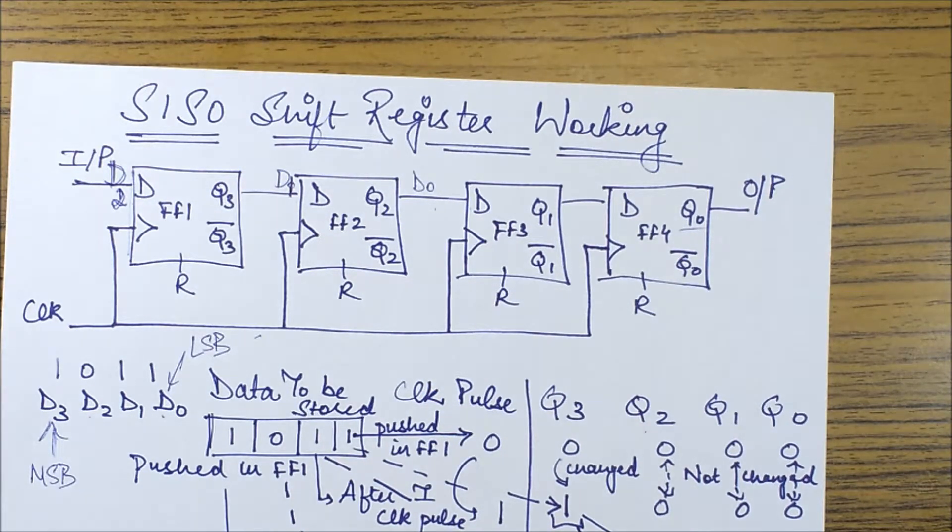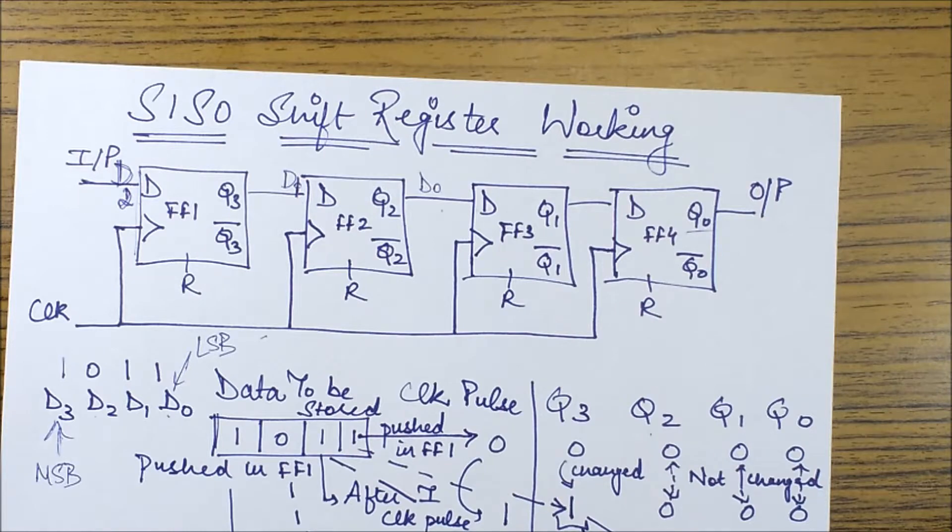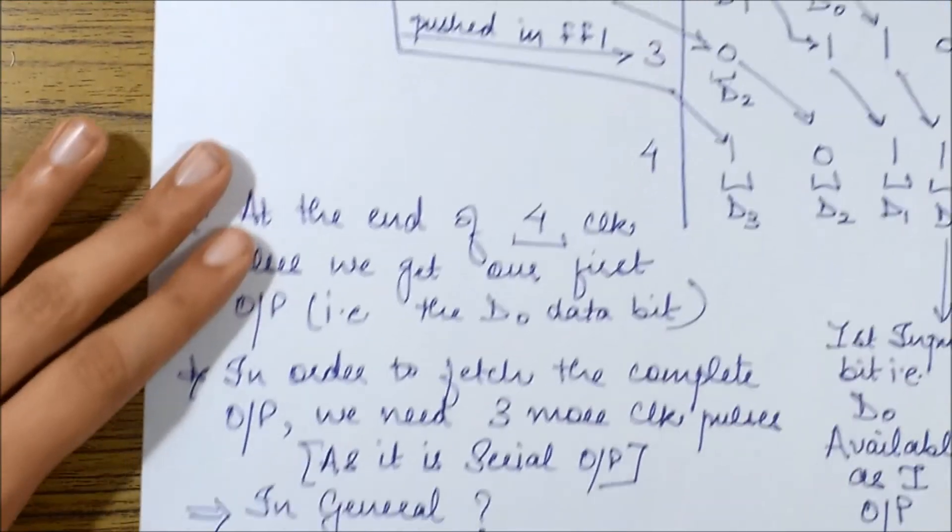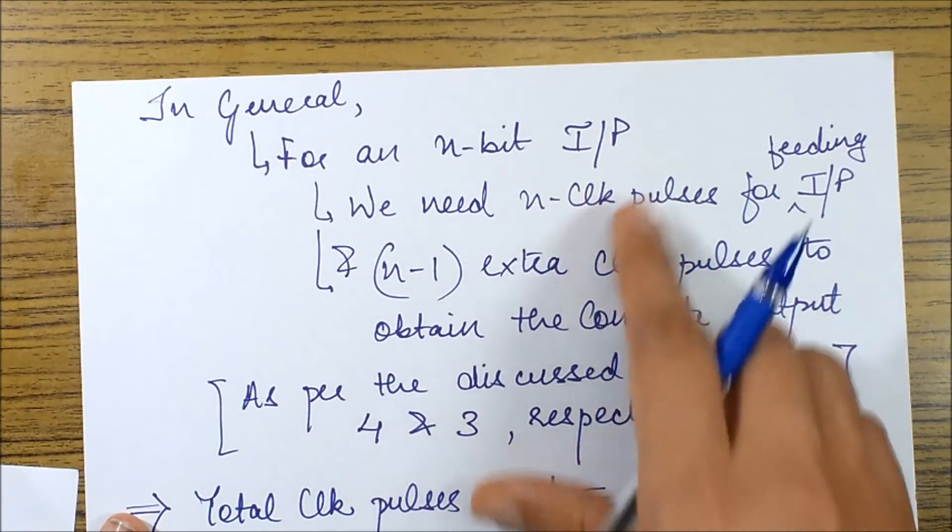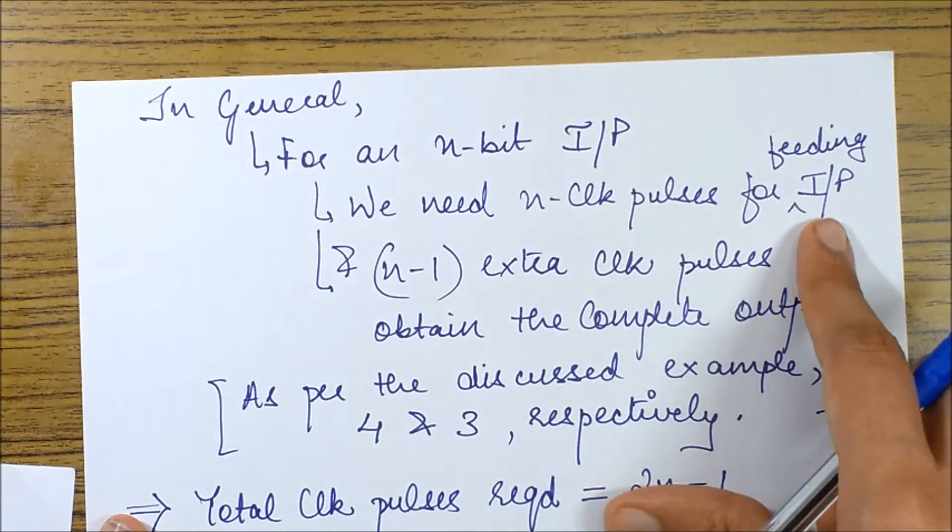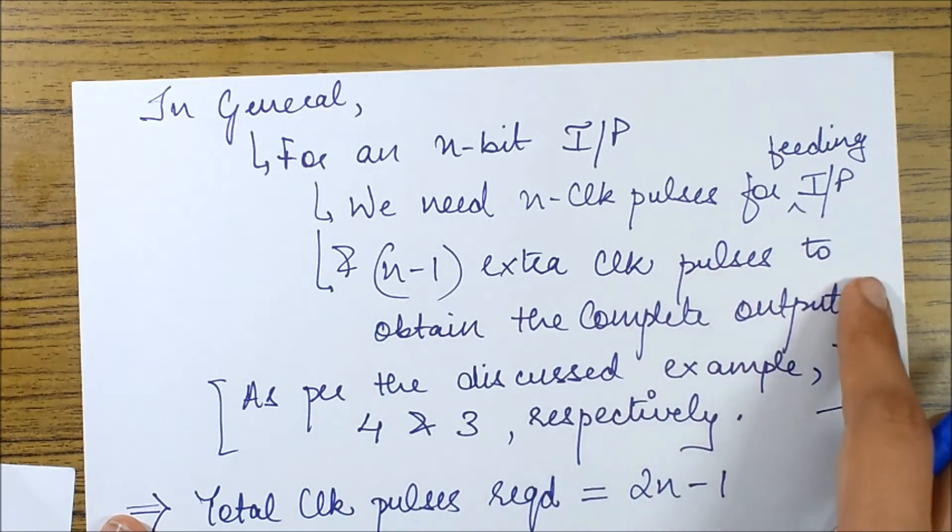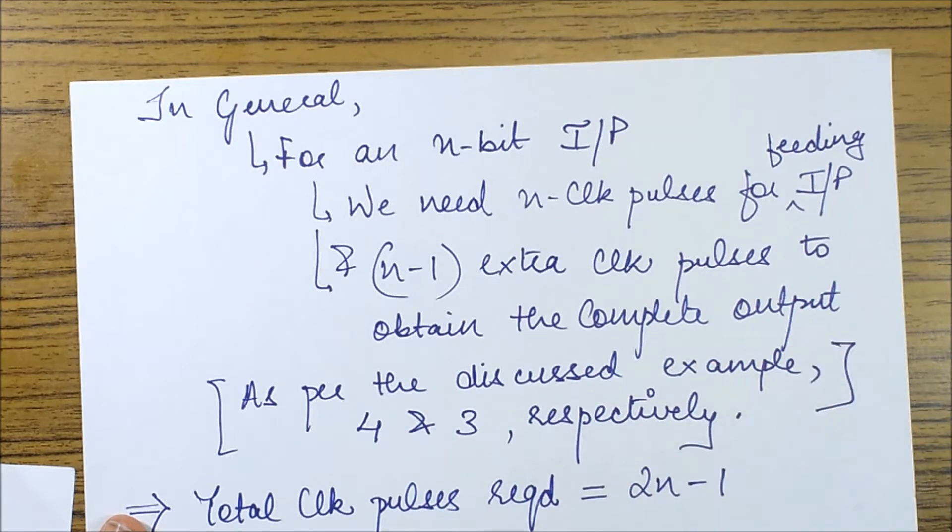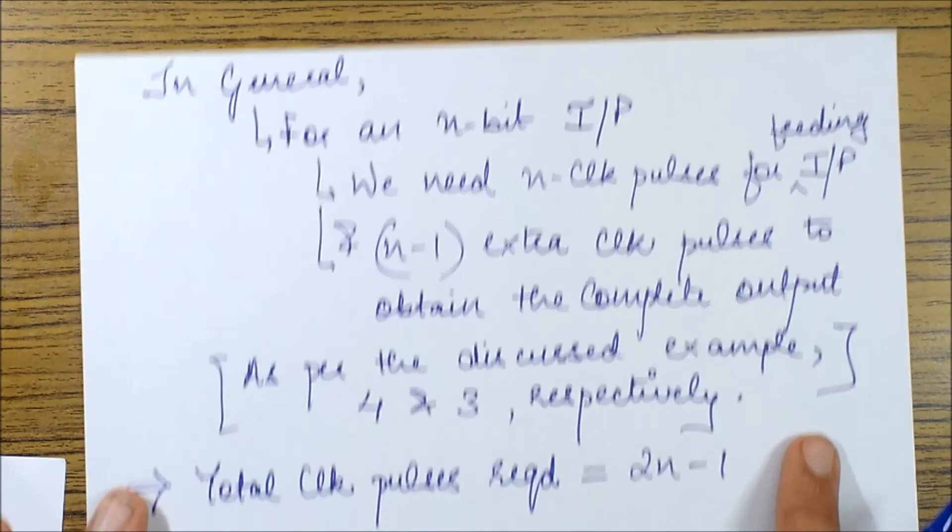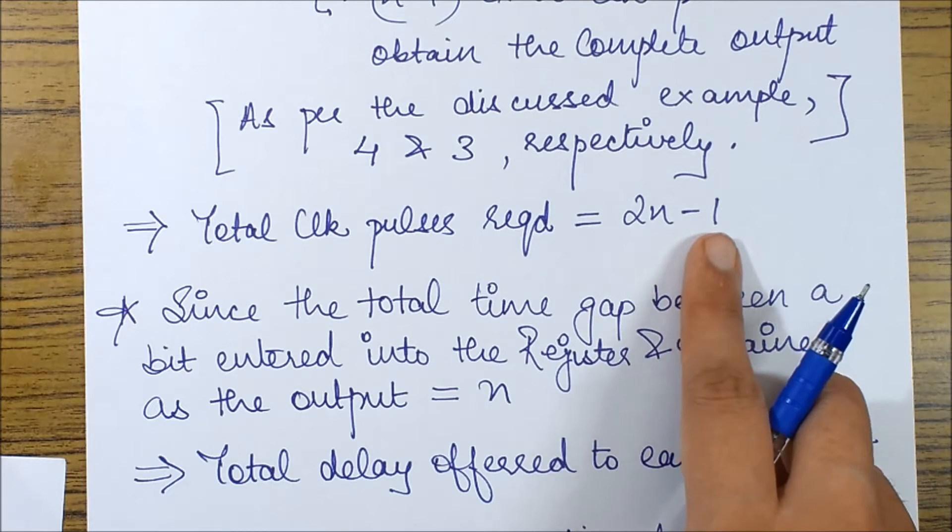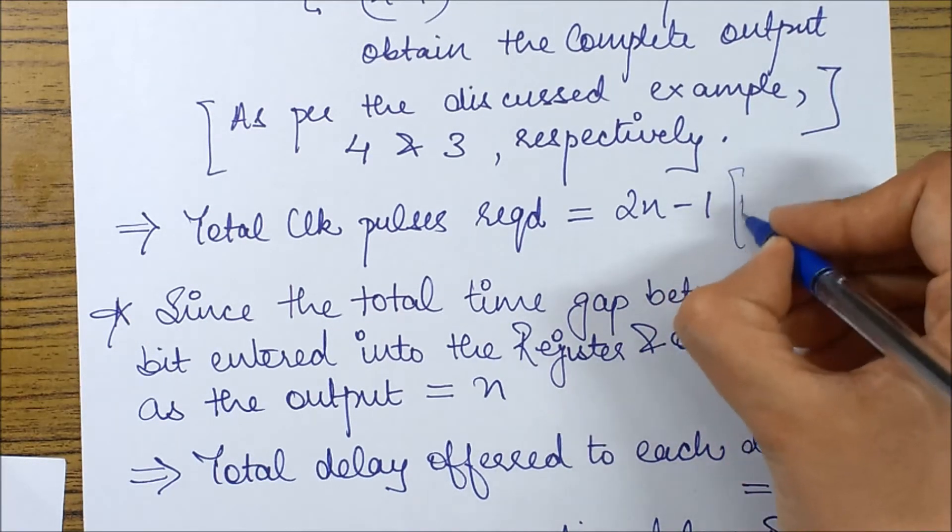I'll have to shift them one by one, so to get my remaining three data bits I'll require three more clock pulses. In general, if I could summarize it, for an n-bit input we would need n clock pulses for feeding my input and n-1 extra clock pulses to obtain the complete output. As per the discussed example, there will be four and three respectively. The total clock pulses required will be 2n-1, which is n plus n-1 from the pattern.